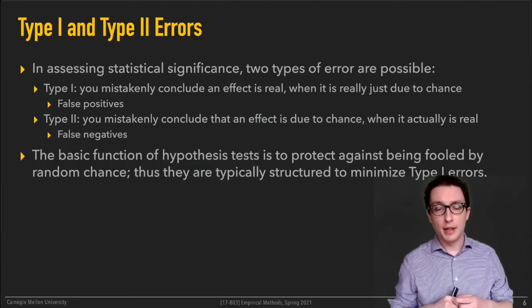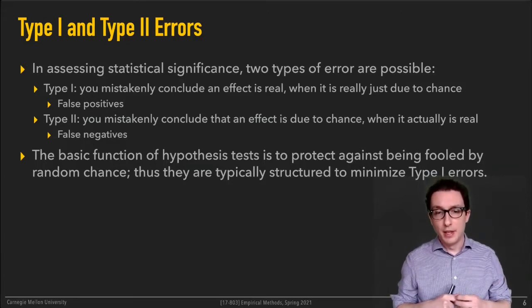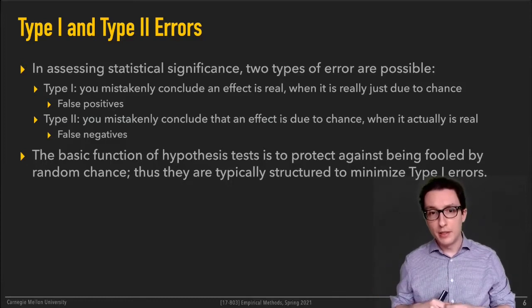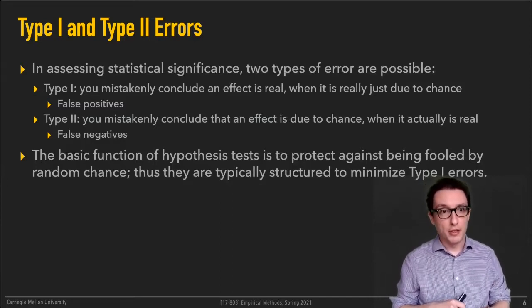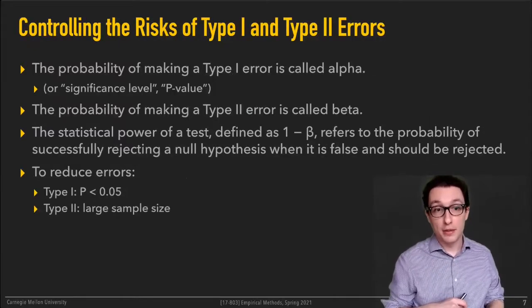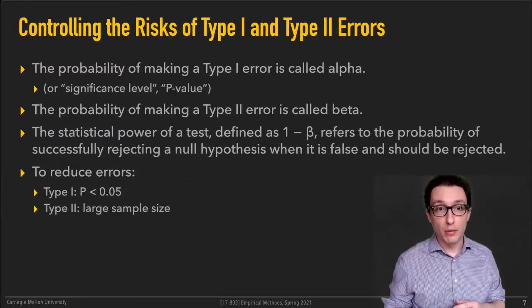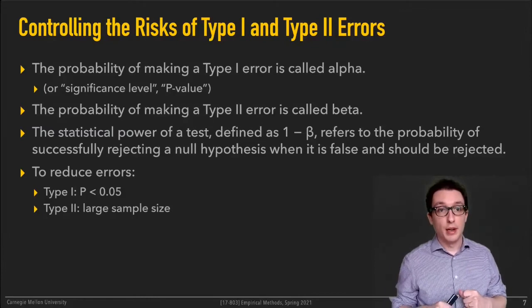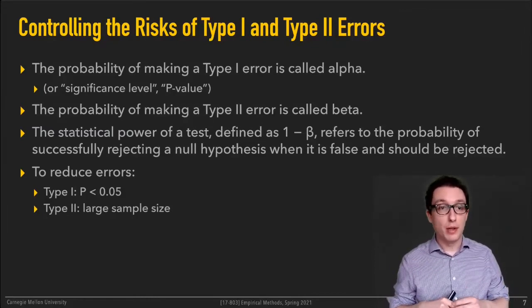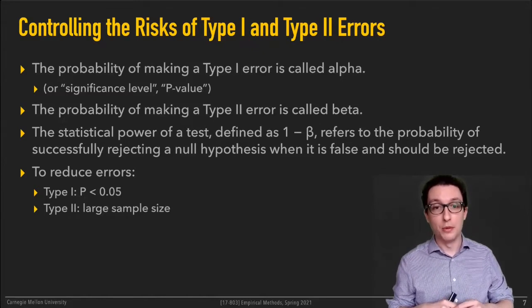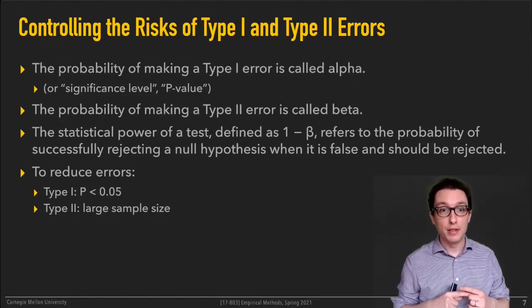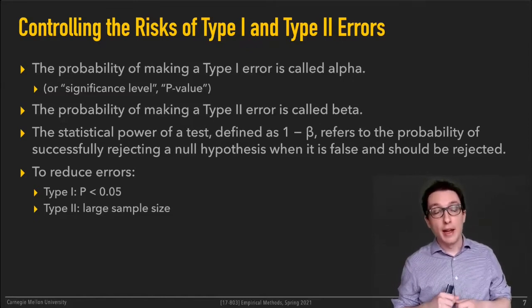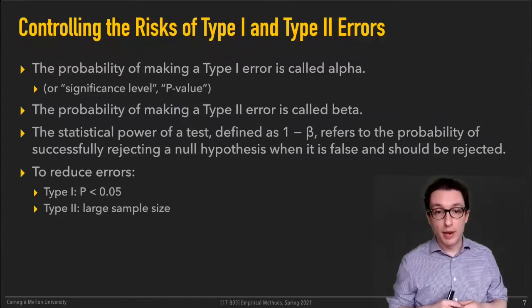Hypothesis testing is typically designed so that it protects you against being fooled by random chance, and typically they're designed to minimize type one errors — minimize false positives. That's where these P values come in. The probability of making a type one error is called alpha, and that's also denoted by this P value. Typically that's something you set ahead of your study — something you decide on before you even collect any data.